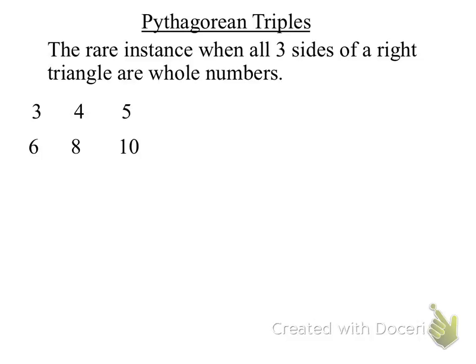Because when I square 3 and 4 and add them together, 9 plus 16, I'll end up getting 25. Since this is a Pythagorean Triple, if I take any multiples of those three, I will get another Pythagorean Triple.